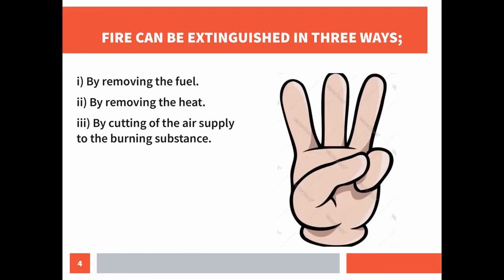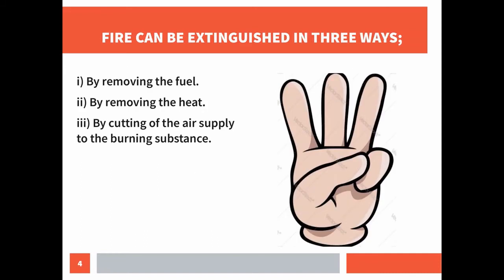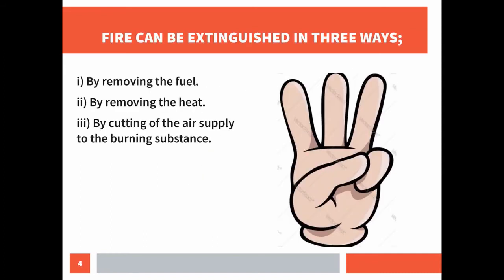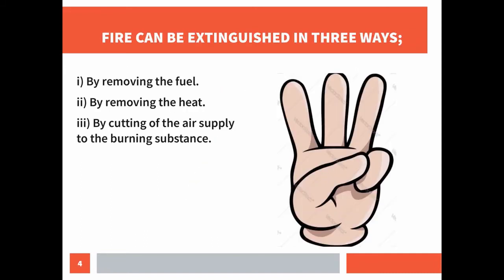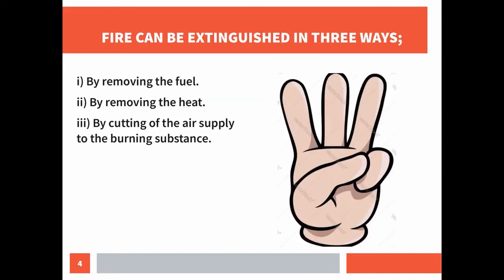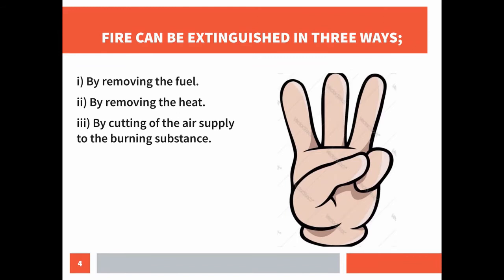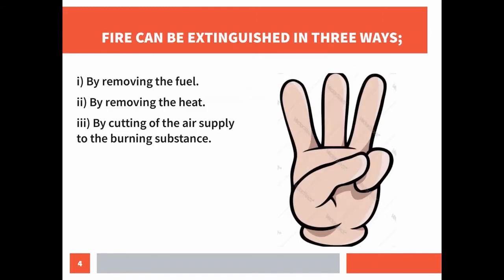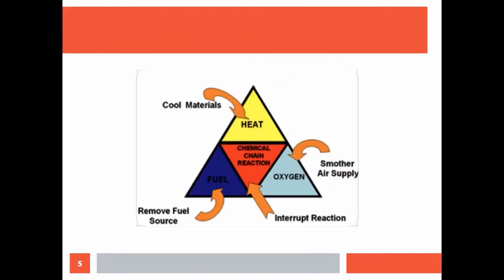When do we remove the fuel? For example, when fire starts in a room, all combustible substances should be removed at once so that the fire may not spread. If possible, the cooking gas cylinder should be removed and electricity should be switched off.